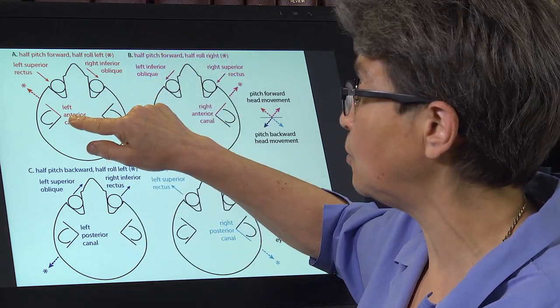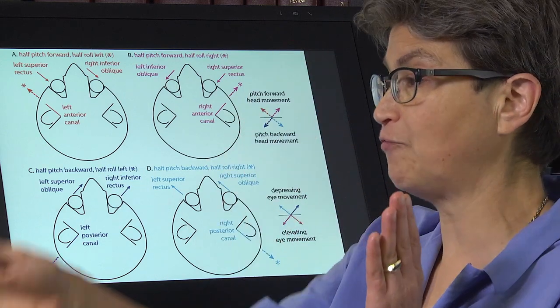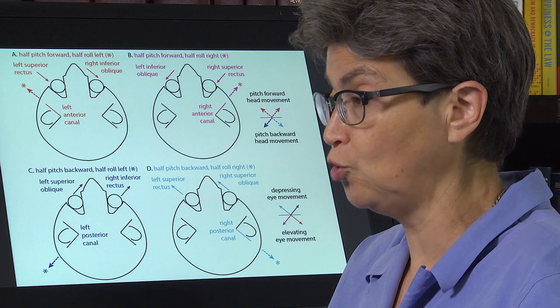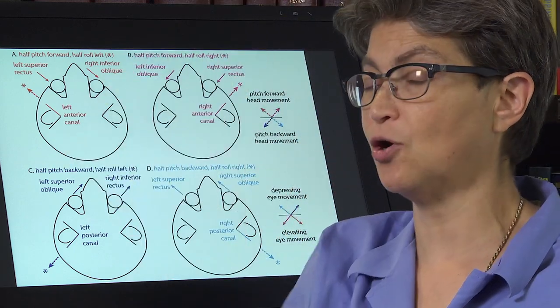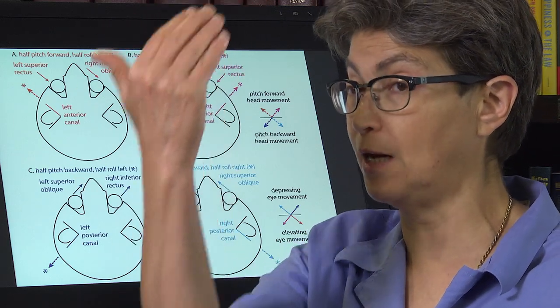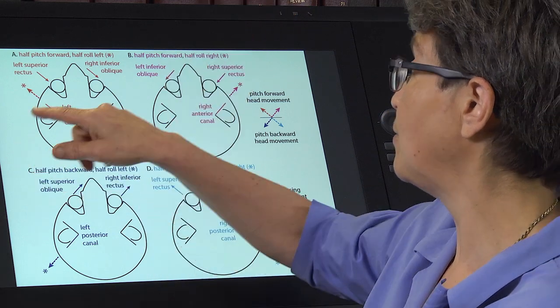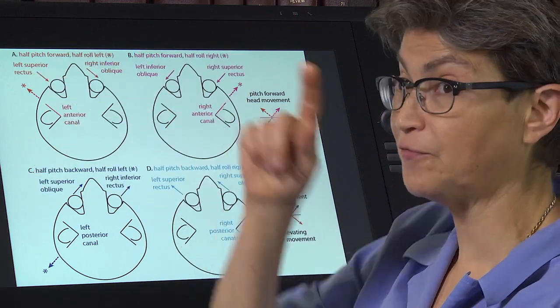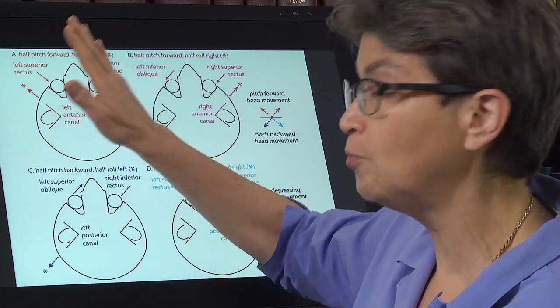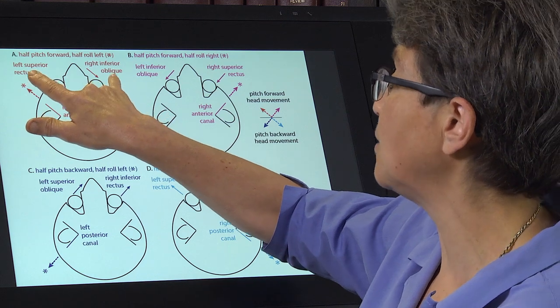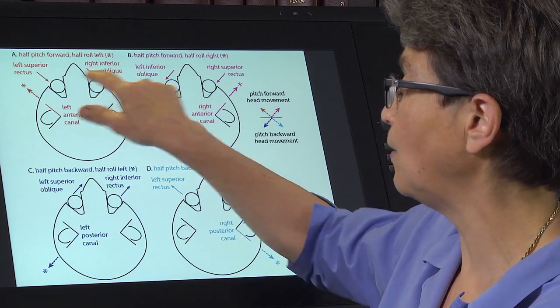So let's just take one example, the left anterior canal. The left anterior canal is a half pitch forward, half roll to the left. It's this kind of a movement. And the eyes are going to end up from the VOR going up. And so that excites the left superior rectus and the right inferior oblique. For all movements, except for horizontal eye movements, the pairs are one rectus and one oblique on opposite sides.